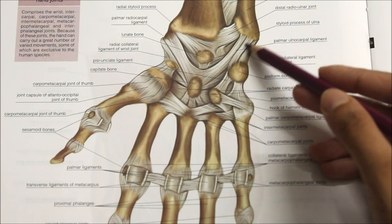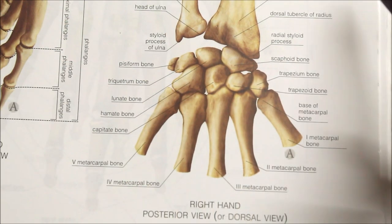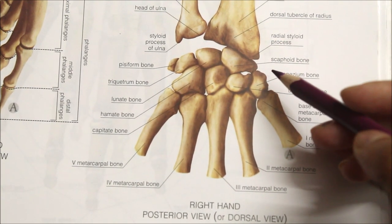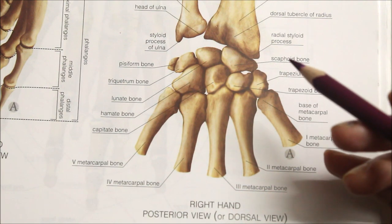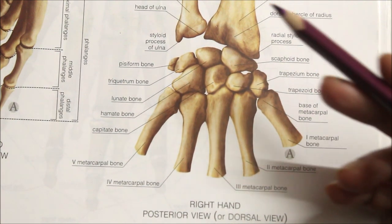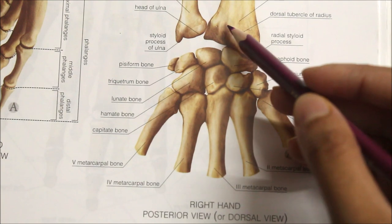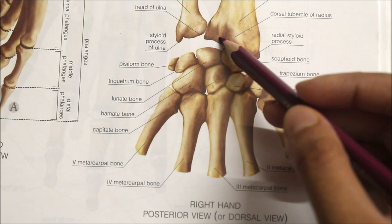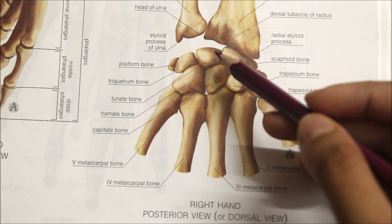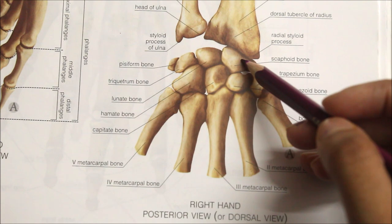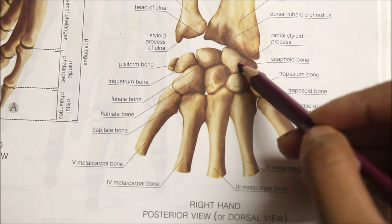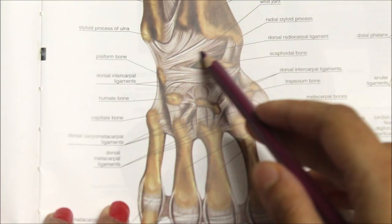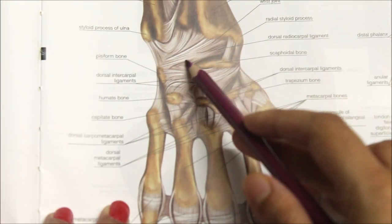Looking at the dorsal aspect, there is one dorsal radiocarpal ligament. The dorsal radiocarpal ligament is weaker than the palmar ligaments. It begins above from the posterior margin of the lower end of the radius, runs downwards and medially, and is attached below to the dorsal surfaces of the scaphoid, lunate and triquetrum bones.